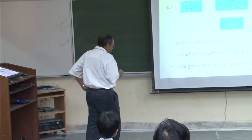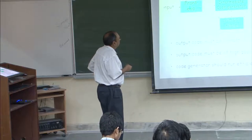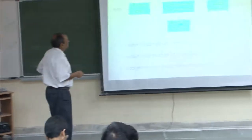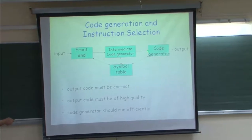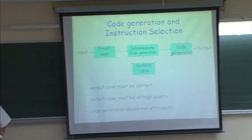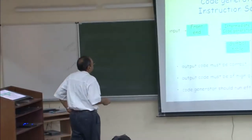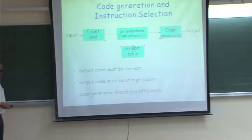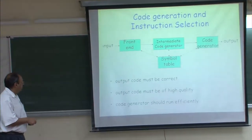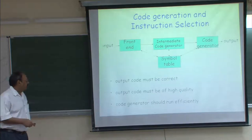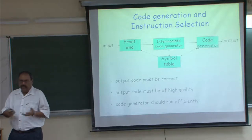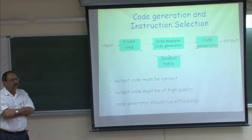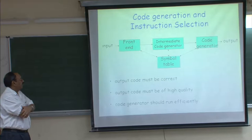What we see here as the specification is: we have the front end, we have seen intermediate code generation, we have all the information in the symbol table, and now we want to take information from the intermediate code generator — which is the three-address code — and from the symbol table, and give the complete syntax of the machine. The functional requirements are: the output code must be correct, the code must be of high quality, and the code generator itself should run efficiently.